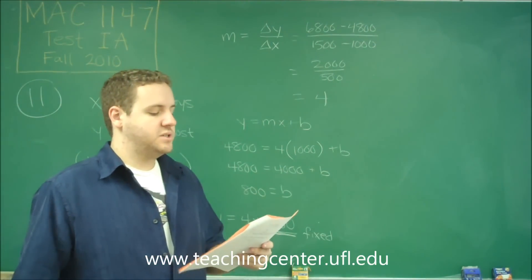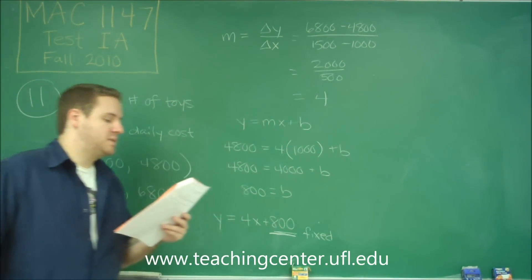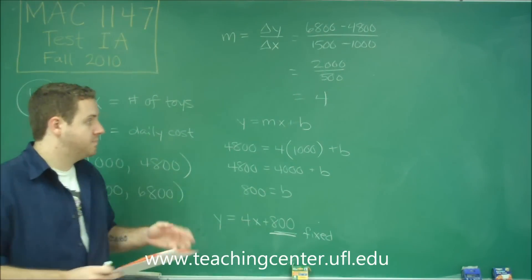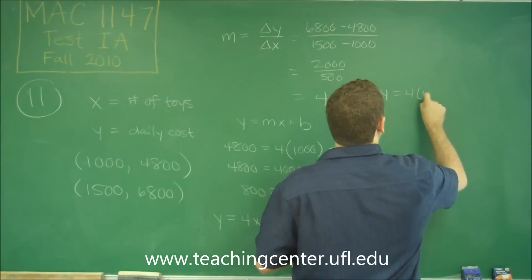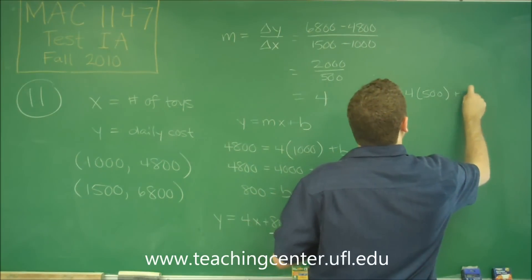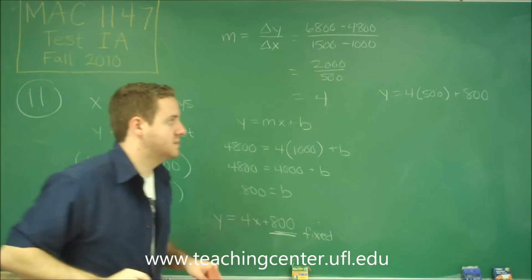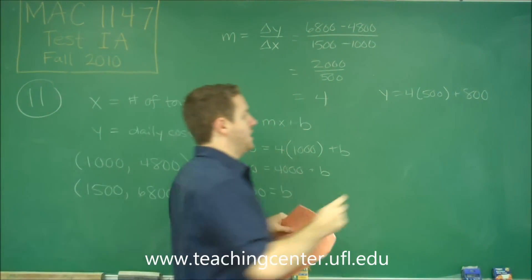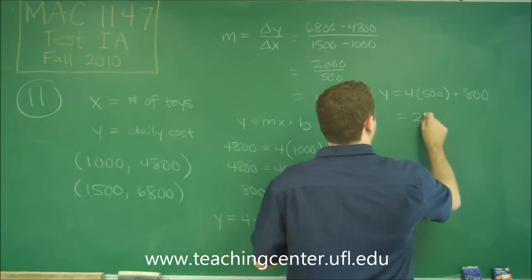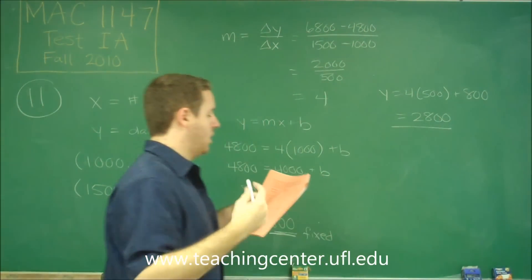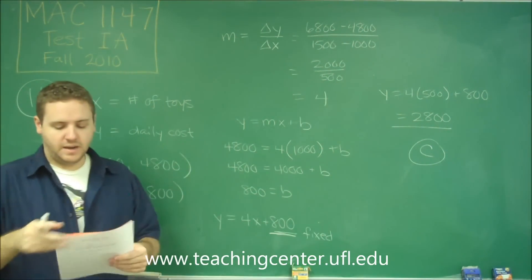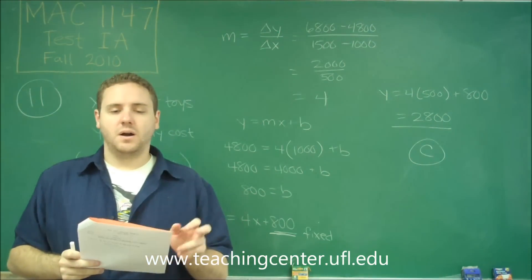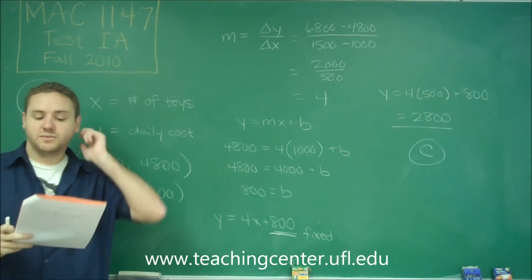So now we just need to figure out, what would the total cost be to produce 500? Well, we could just plug that in. So our cost would be 4 times 500, plus that 800 fixed cost. That doesn't disappear. 4 times 500 is 2,000. So we get 2,800. So our answer then is C. That's the one that matched our 800 fixed cost and our 2,800 total cost for producing 500 toys.